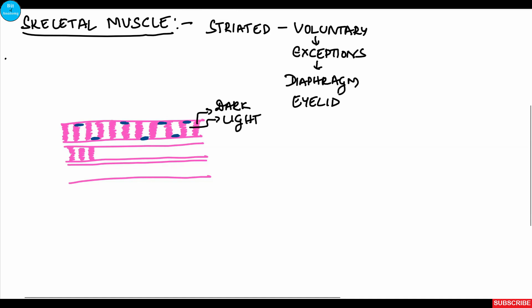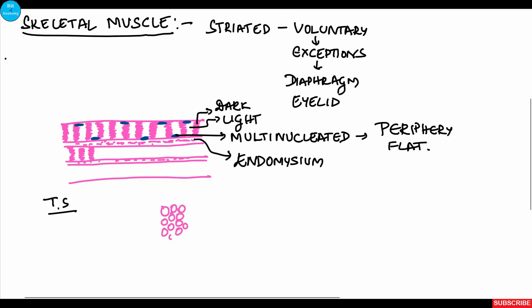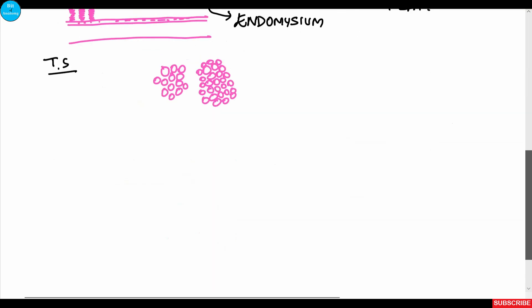These are called A and I bands. Surrounding each individual muscle cell is connective tissue called endomysium. In the transverse section of skeletal muscle, we can see that muscle fibers are arranged in bundles or groups, and the nucleus is situated in the periphery of each cell.